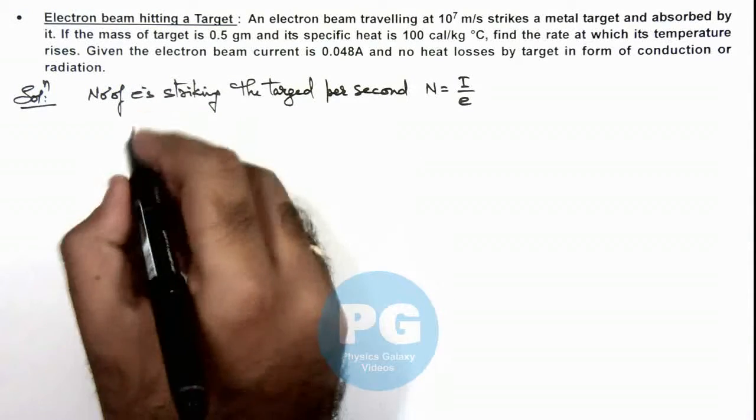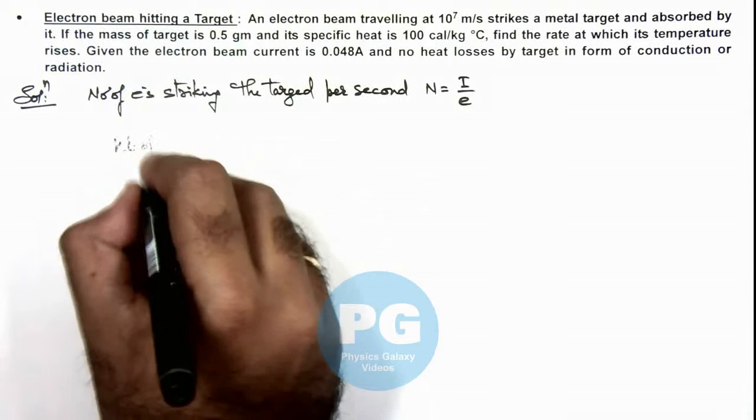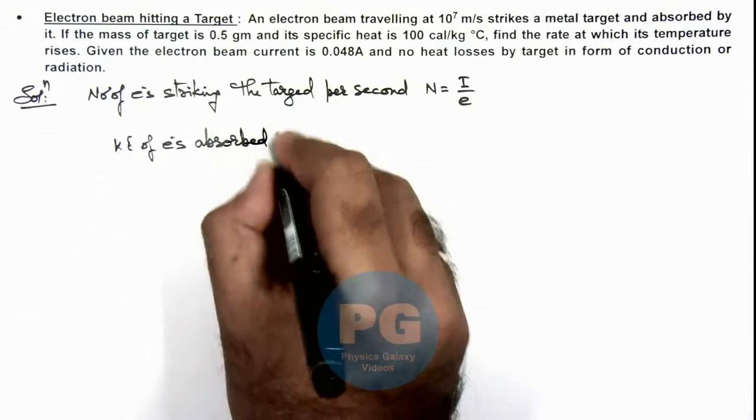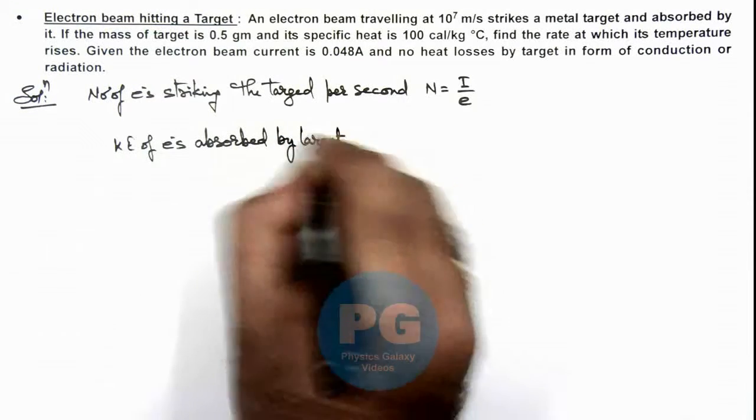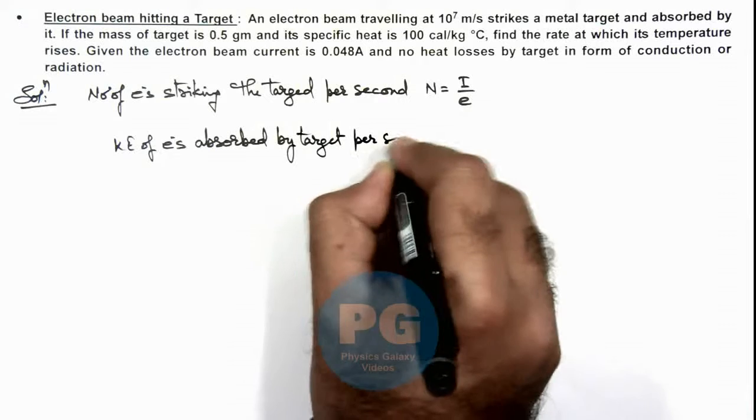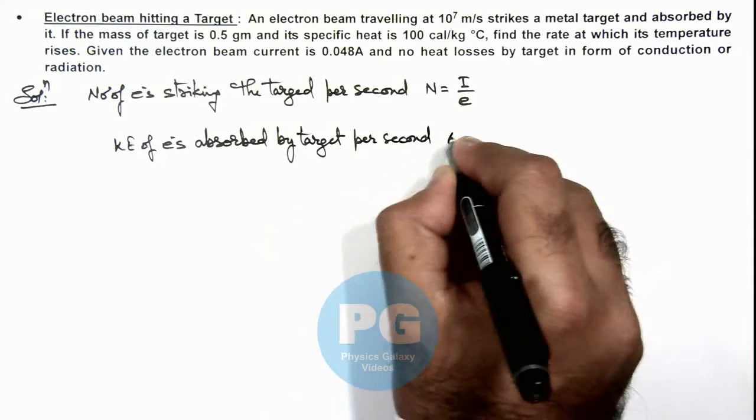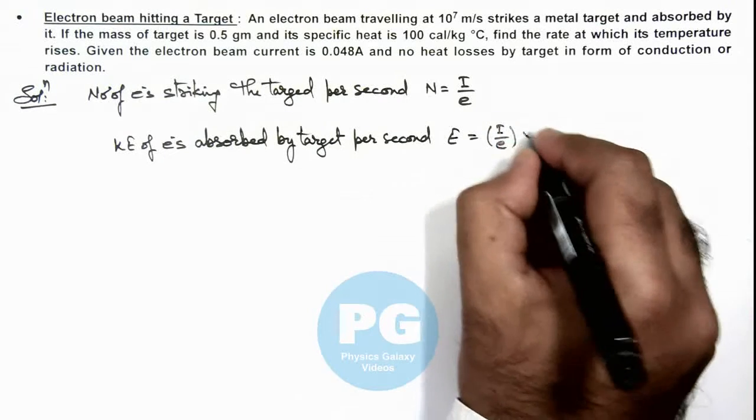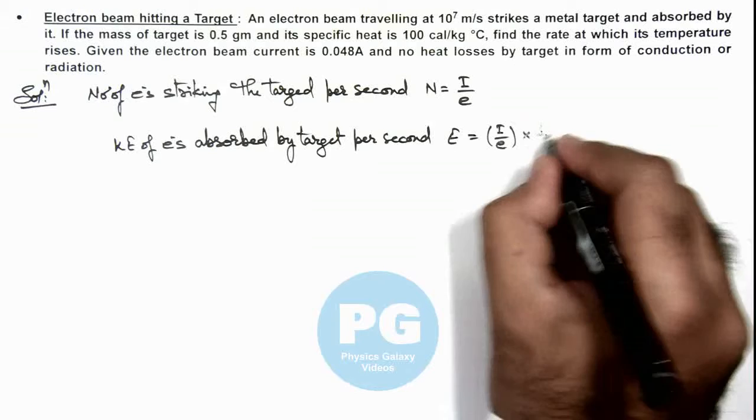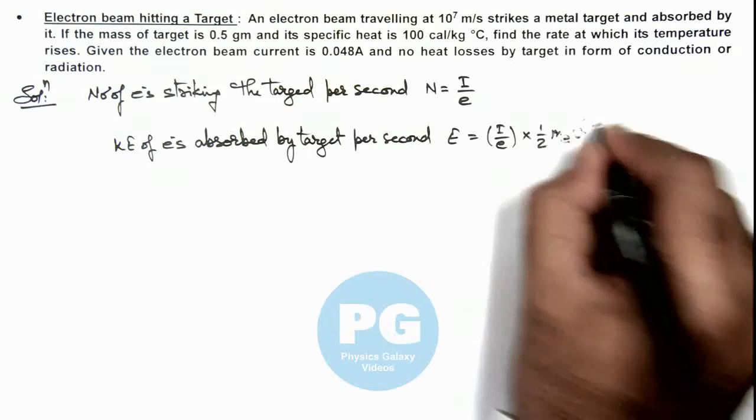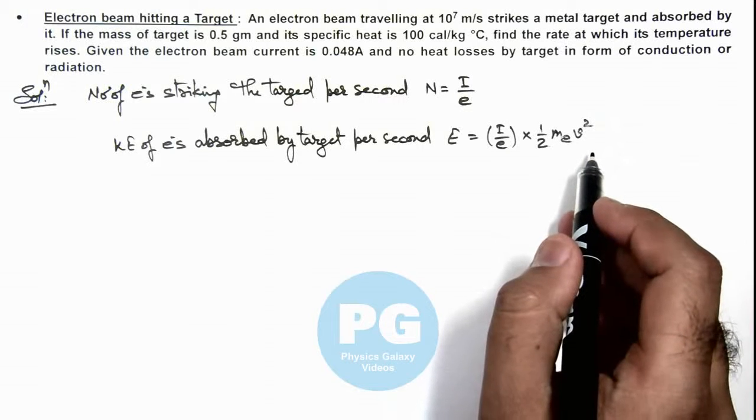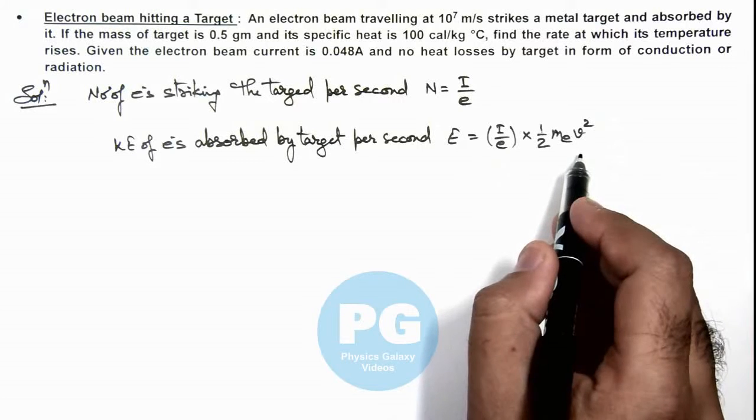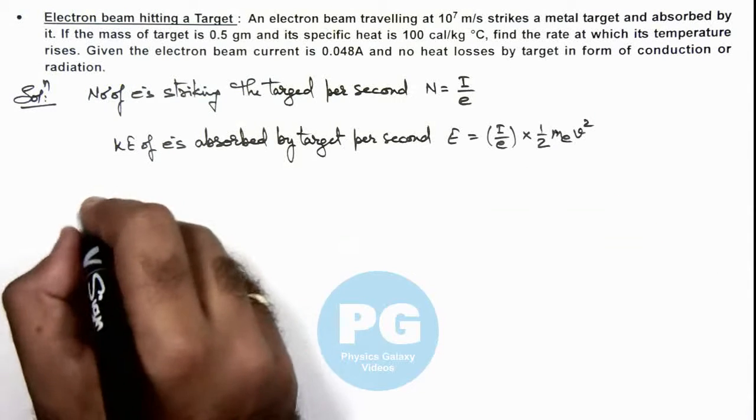Using this we can calculate the kinetic energy of electrons absorbed by target per second. This can be given as E, which can be written as number of electrons striking multiplied by the kinetic energy of electrons which is half m_e v squared, where m_e is the mass of electron, that's also a standard parameter we are aware of. So this much amount of energy is absorbed by target.